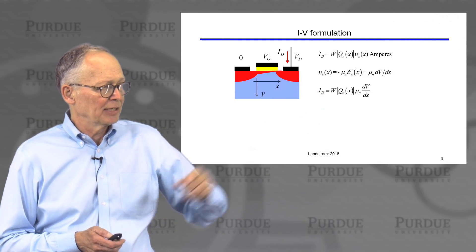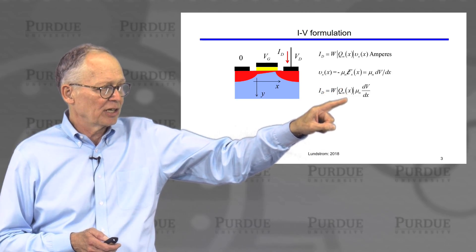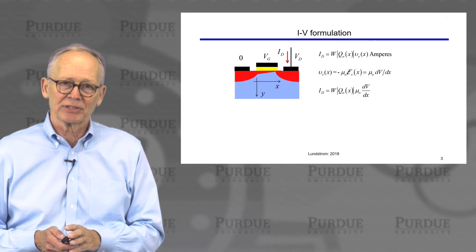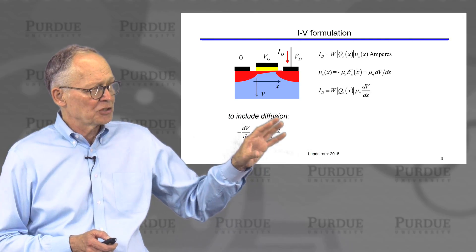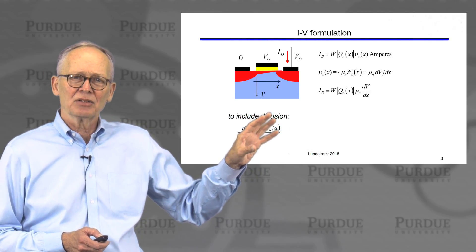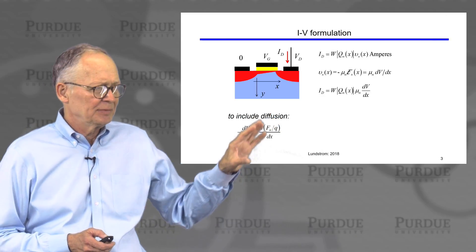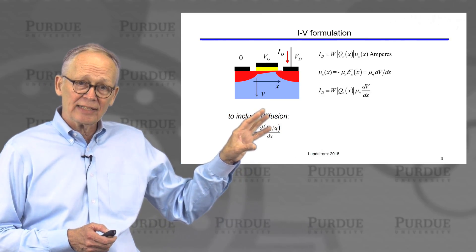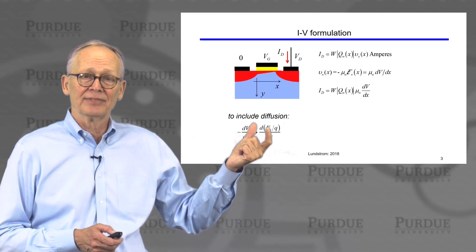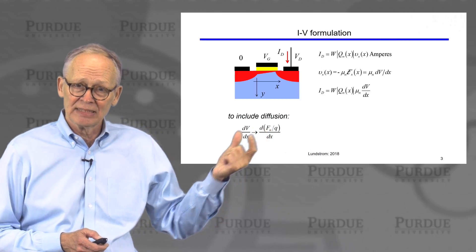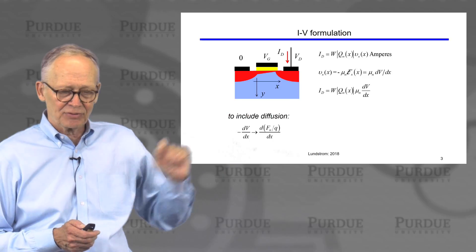Putting that together, I have an expression for the drain current in terms of the charge, the mobility, and the gradient of the electrostatic potential. I can separate variables. Before I do that, I'll note that we're only including the drift current here. You might worry about the diffusion current — we could do that analysis, it's a little more involved. If I replace the electric field by the gradient of the quasi-Fermi level, then both drift and diffusion are included, but we'll save that for another time.